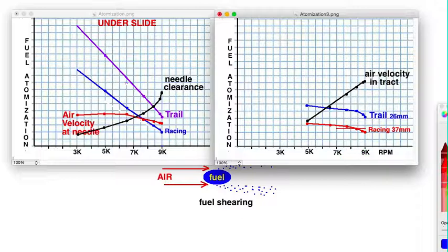For trail riding and street riding, you're more like emphasis is between five and seven thousand rpm, so the average for that would be about right here. In this case, a trail or street bike with a 26 millimeter carb has higher velocity because the area is smaller. With that higher velocity you get more atomization.